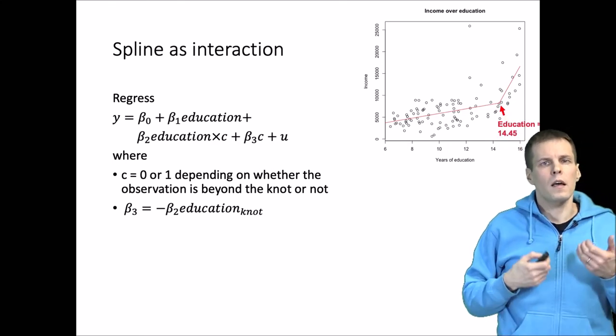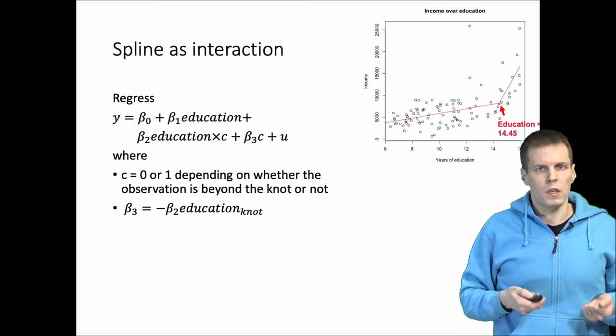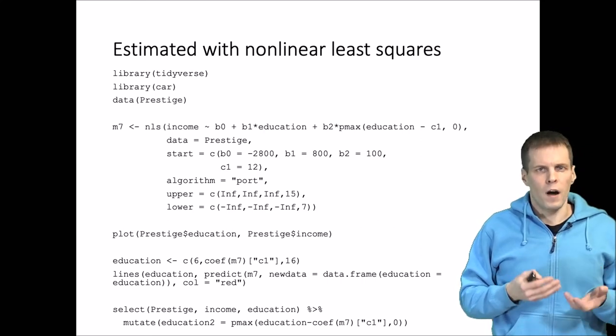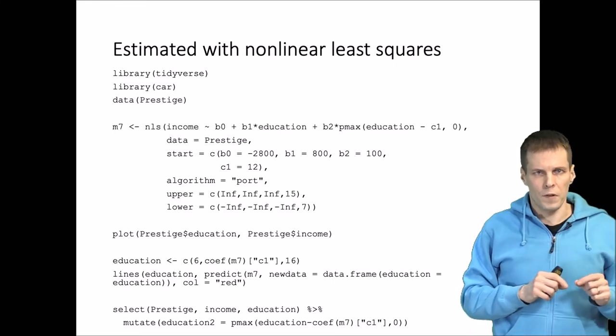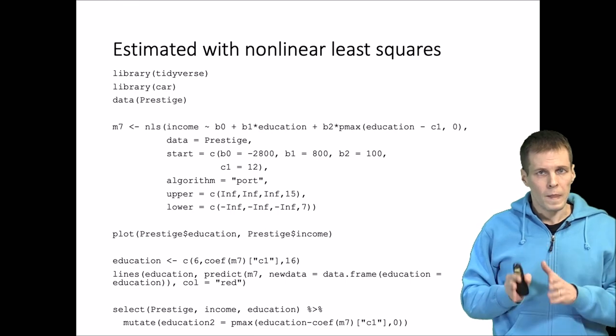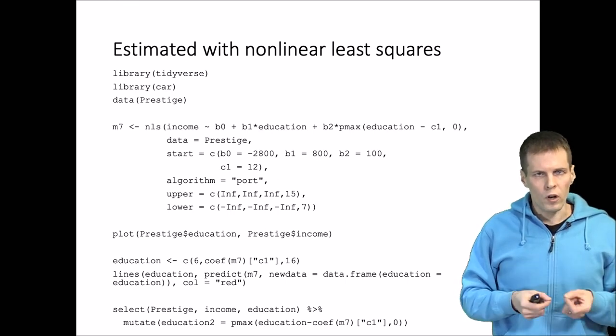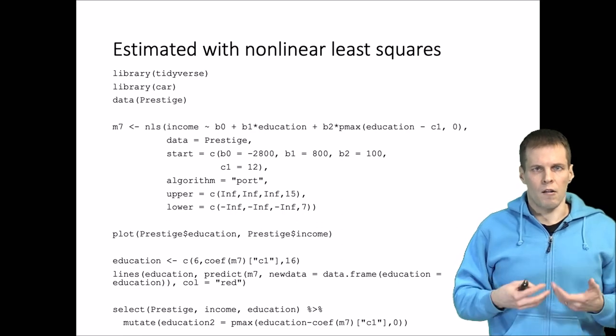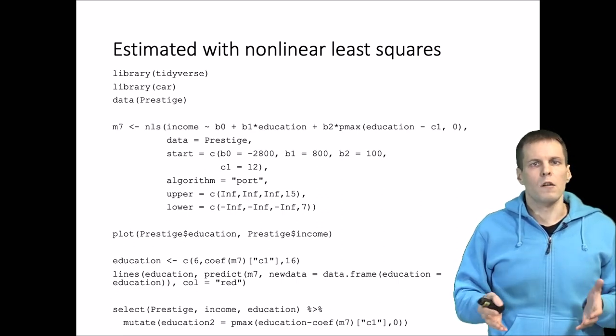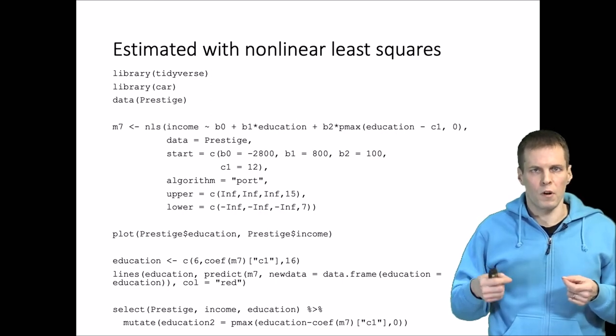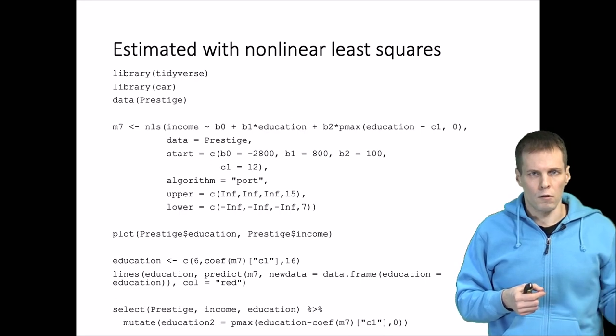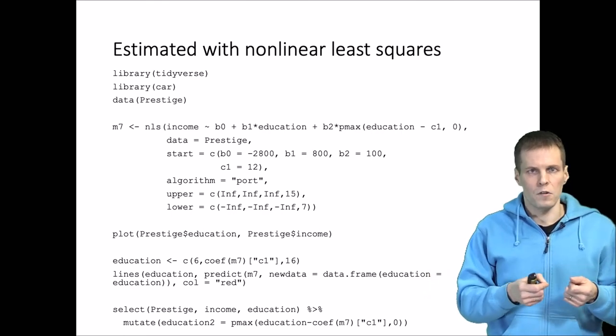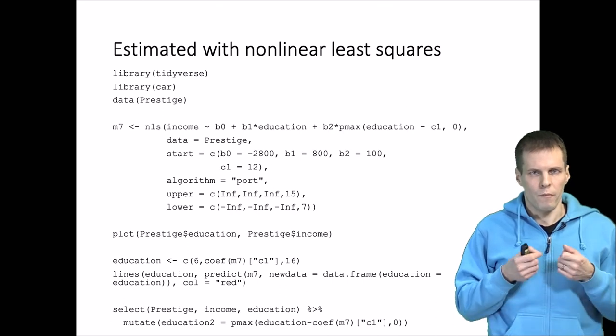In practice these models are estimated using something called non-linear least squares. The idea of non-linear least squares is that we find the spline including the regression coefficients and the knot value that minimizes the sum of squared residuals. It is called non-linear least squares because there is no closed form solution, so we cannot simply apply linear algebra and arrive at the estimates. Rather, the computer will actually calculate the sum of squared residuals trying different values for the regression coefficients and the knot, and it will iteratively find the values that minimize the sum of squared residuals.